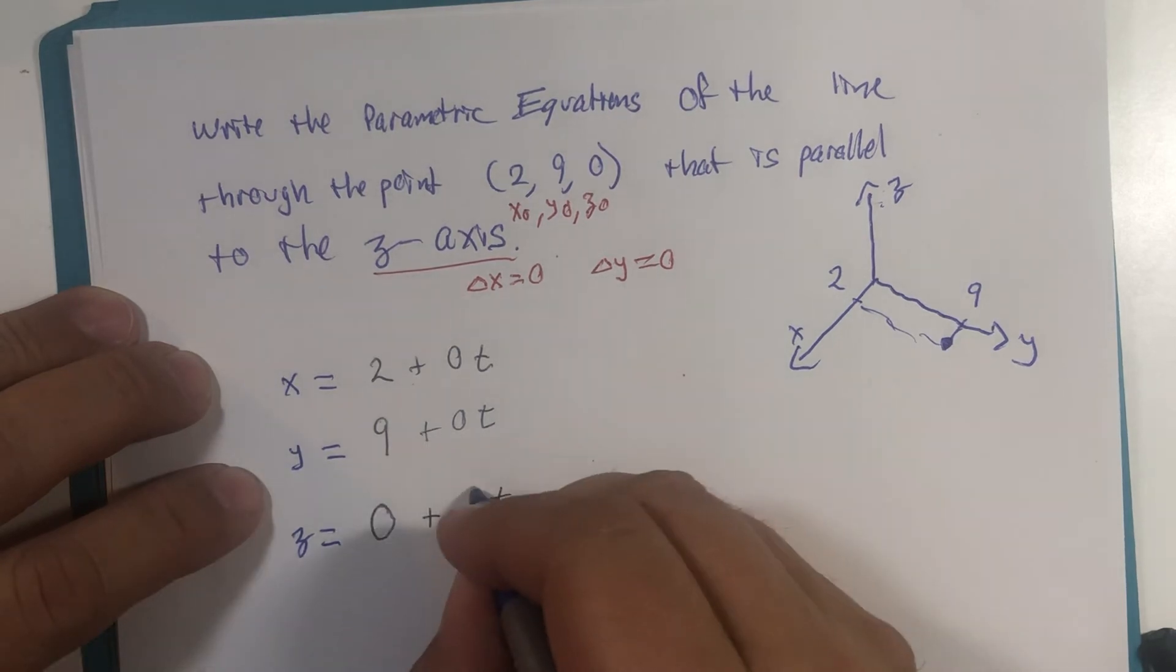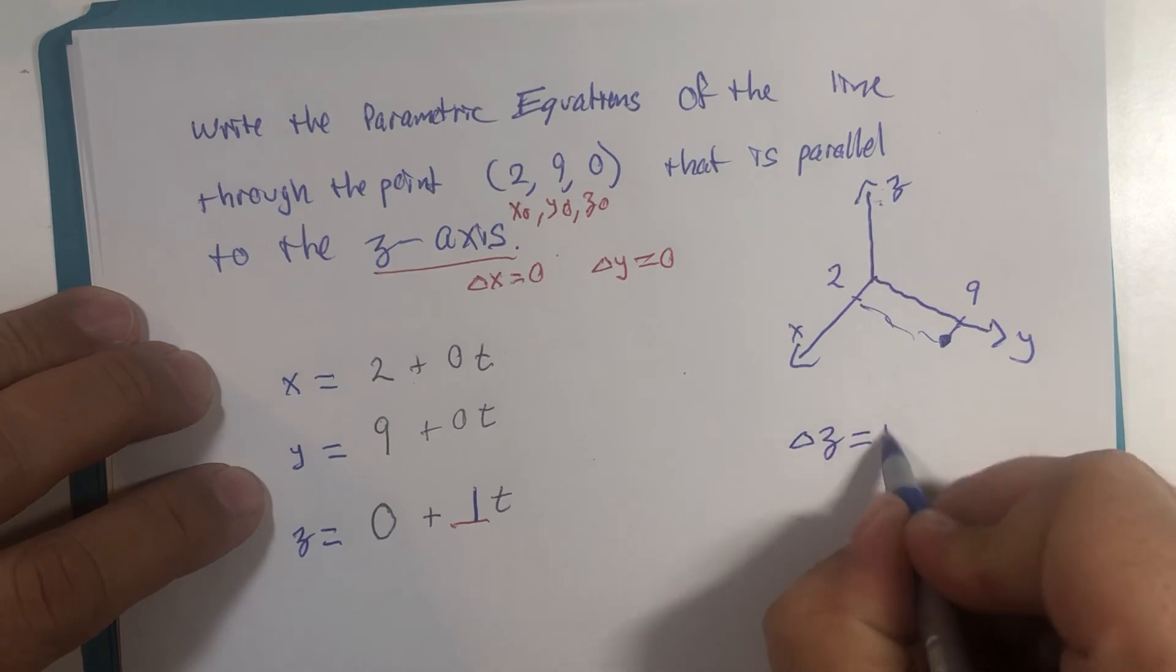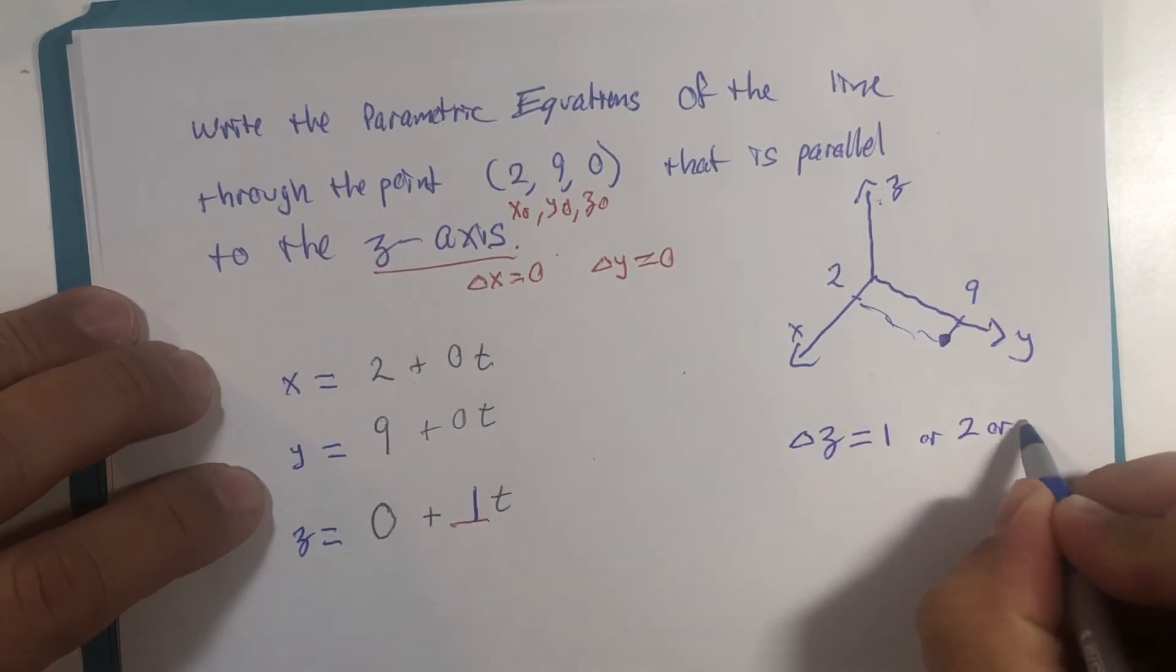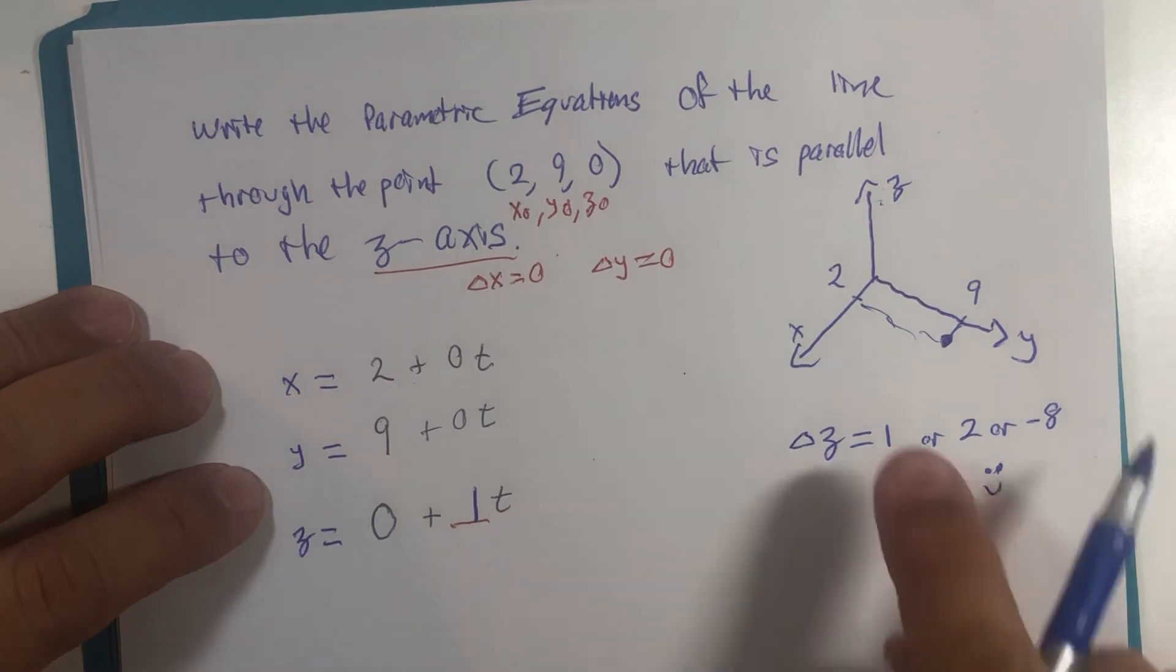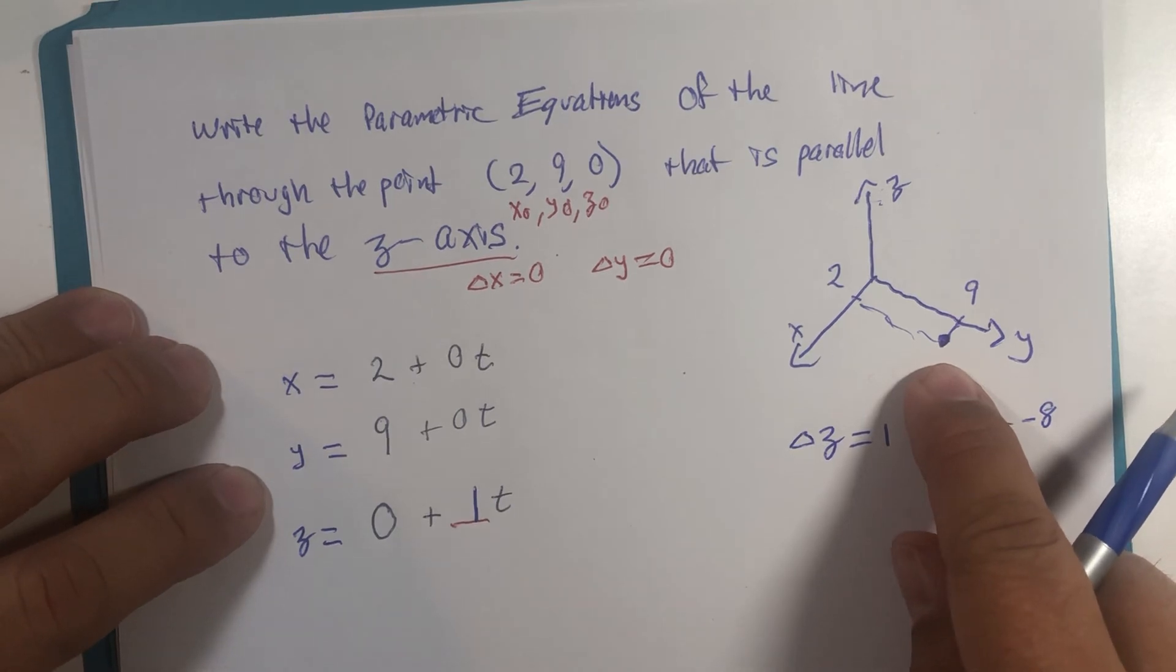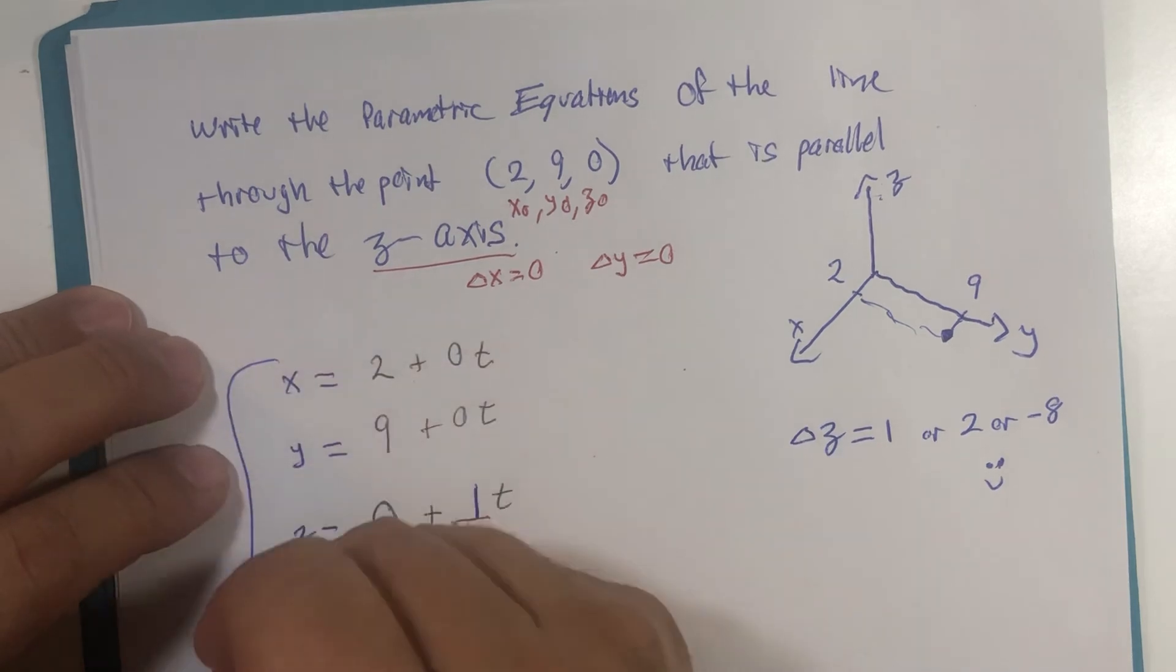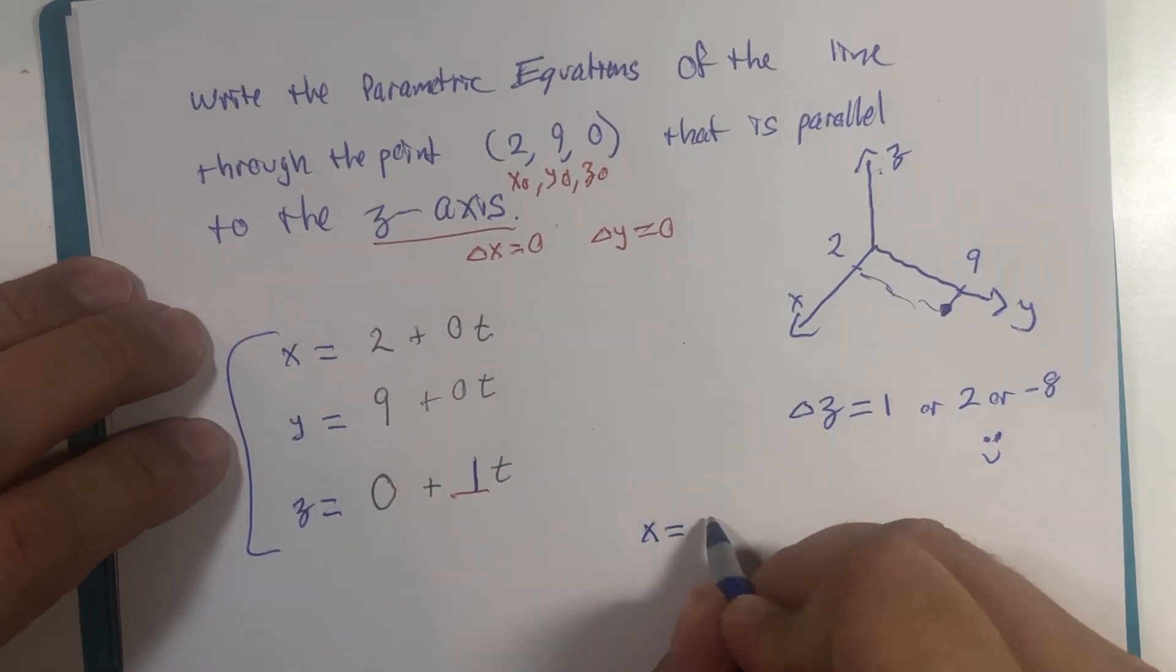It has to go in the z direction. The easiest thing to do would be to maybe put a one there. Delta z could easily be one, but if you wrote it as two or negative eight, those would be okay also, as long as it was in the direction of z it would be correct.